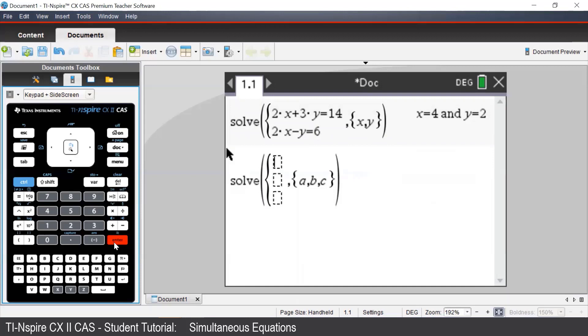Once again, we're entering in our equations. So we may want to solve 3a minus 4b plus 5c equals 10.